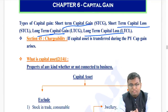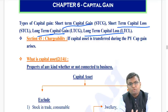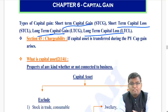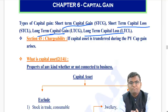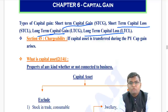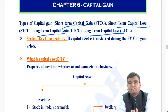This chapter is divided into three parts. The first part covers general provisions - what is a capital asset, what is transfer, and the rules. The second covers special cases like exchange and relinquishment. The third covers exemptions and tax rates. Section 45 - chargeability - says if a capital asset is transferred during the previous year, capital gain arises after applicable exemptions. Capital gain is taxable in the year in which transfer takes place, not the year in which the amount is received.